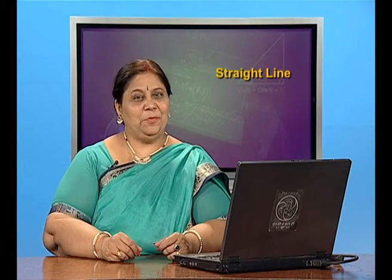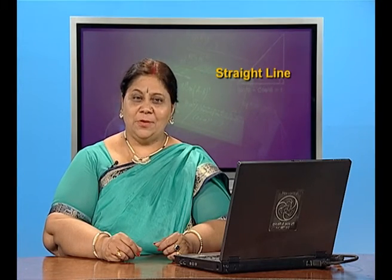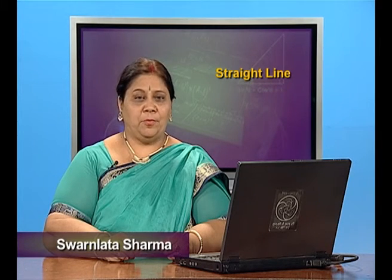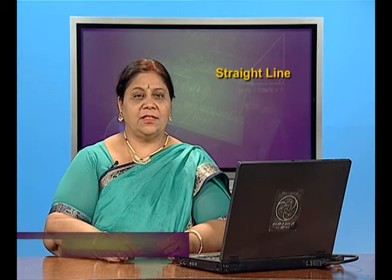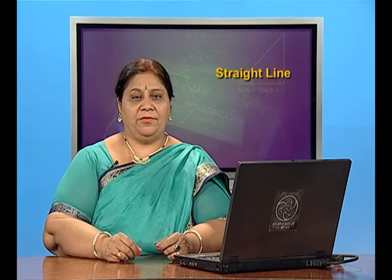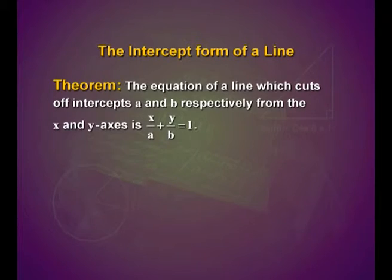Hello, students. In the previous episode, we discussed about different forms of straight line like point slope form. Here, we shall discuss about the intercept form of a line. We have a theorem which says the equation of a line which cuts off intercepts a and b respectively from the x and y axis is x upon a plus y upon b is equal to 1.